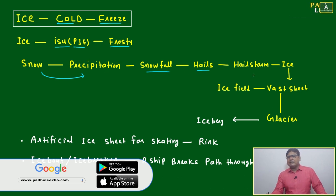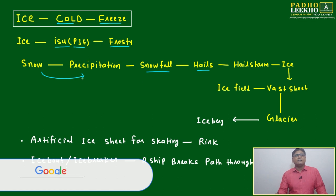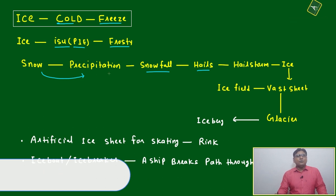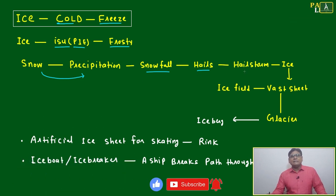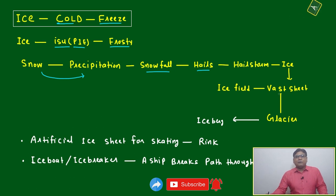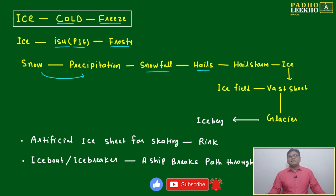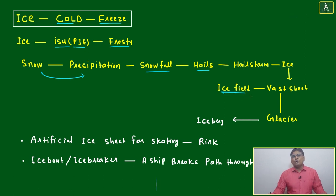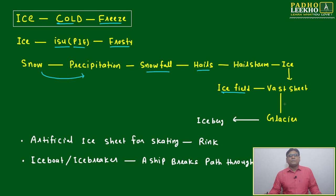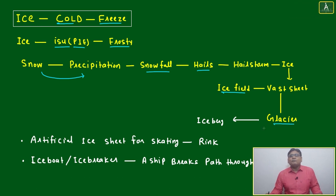Try to understand this chain: snow, precipitation, snowfall, hills, hailstorm, ice. If there is a vast sheet of ice, you can call it an ice field — that is common sense. A vast sheet of ice is called an ice field.